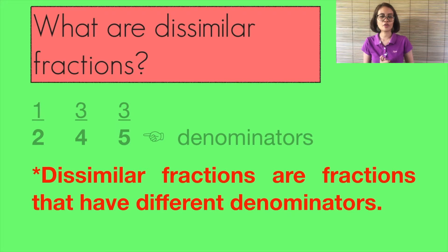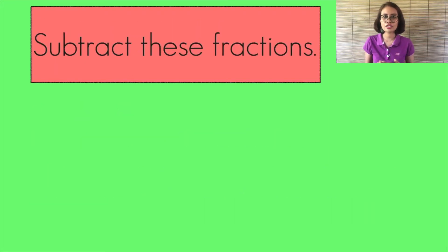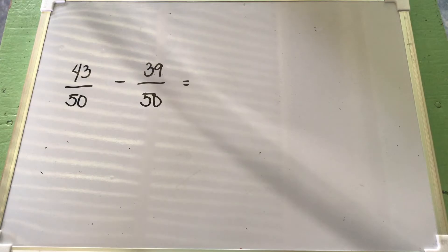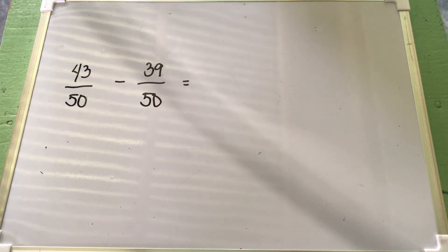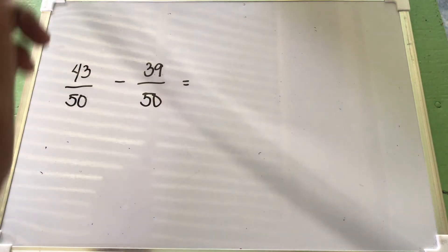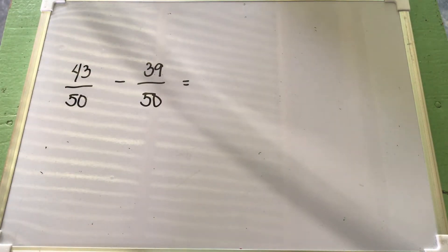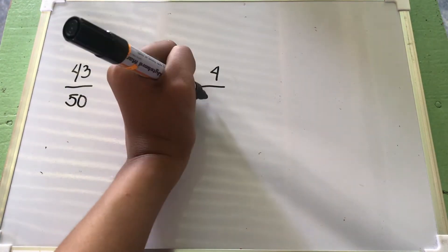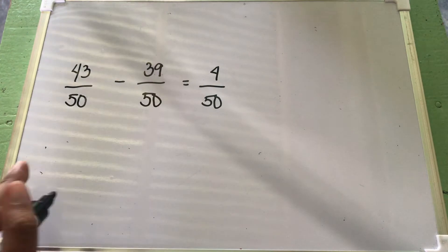Let's try to subtract. Since similar fractions are the easiest to solve, let us have 43 over 50 minus 39 over 50. Since these are similar fractions, it's quite easy to subtract. 43 minus 39 equals 4, and we copy the denominator, 50, since these are similar fractions.